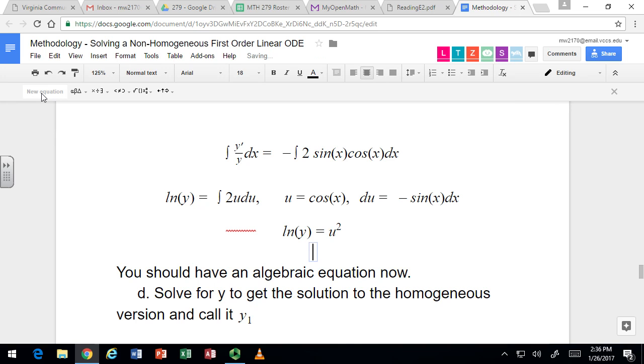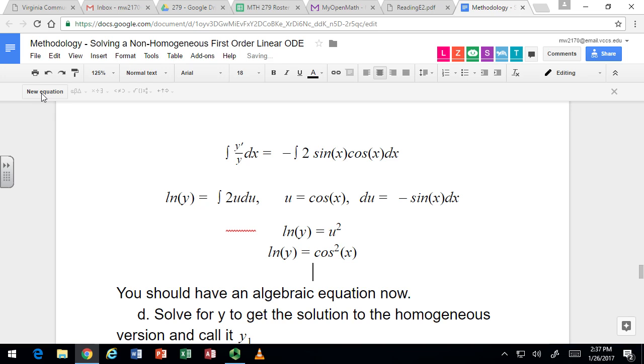du dx equals negative sine x. But we rearrange it so that it's du equals negative sine of x dx, because that's what we have in there. And that way we can substitute to change the variable of integration. So that u, we want to go back from u to what we originally had. And so it's really cosine squared of x. That's what u was, cosine of x. And we need to run back one step further to find out what y is.